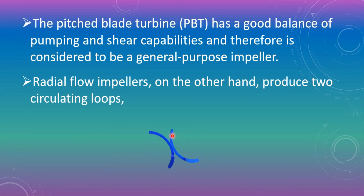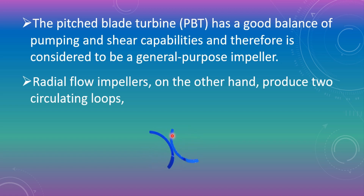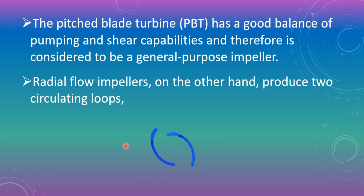A pitched blade turbine has a good balance of pumping and shear capabilities and is therefore considered to be a general purpose impeller. A radial flow impeller, on the other hand, produces two circulating loops as can be seen in the simulation. These two loops produce both radial and axial components.